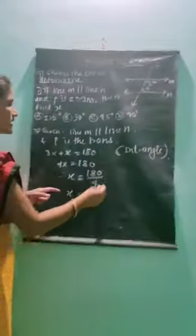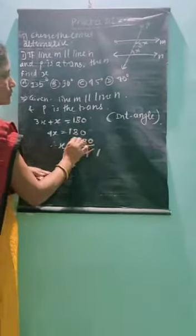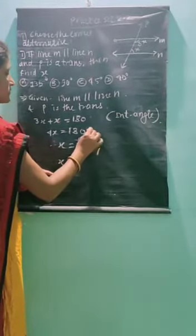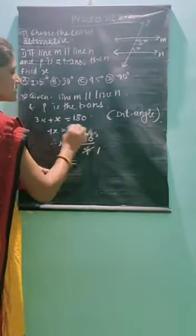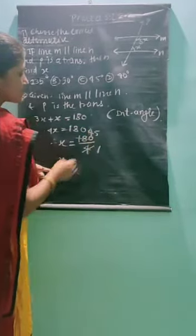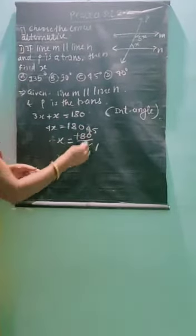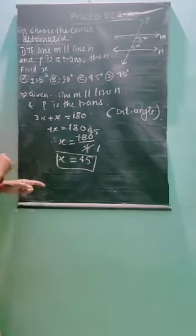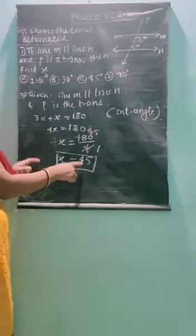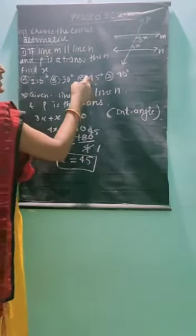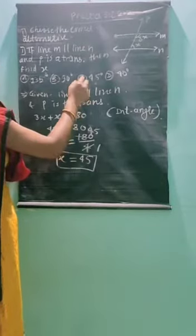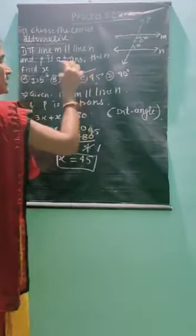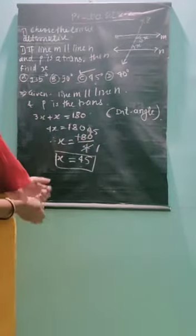3X plus X is 4X, and 4X equals 180. Hence the value of X is 180 divided by 4, which gives X equal to 45. Looking at the options, option C is the correct answer. In this way we solve this question using the property of two parallel lines and their transversal.